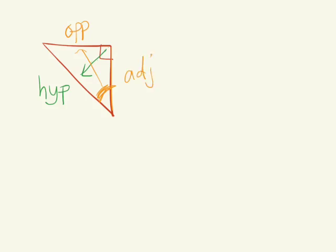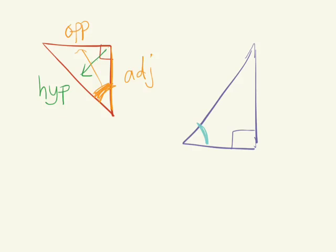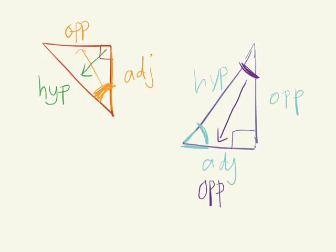So we have our hypotenuse, the adjacent side length in relation to this angle, and our opposite side length. Now label this triangle in relation to this angle. Which side is opposite? This side now becomes the opposite, this is the adjacent, and the hypotenuse never changes — it's always located across from the right angle. But it depends on which angle you're referring to in order to label your adjacent and opposite sides.